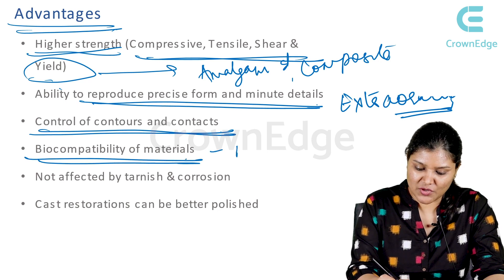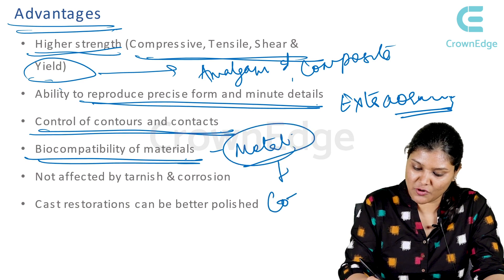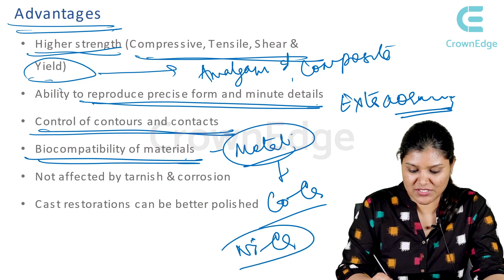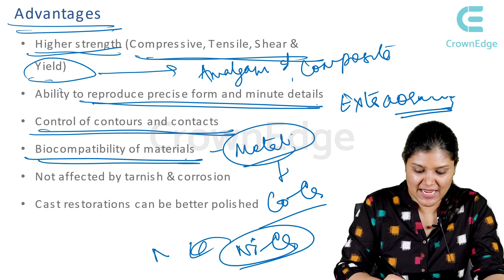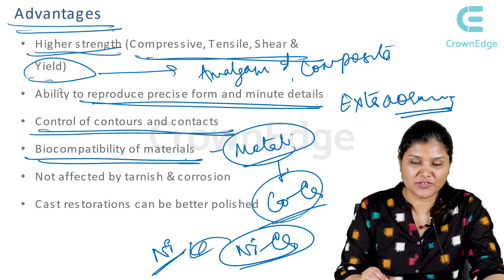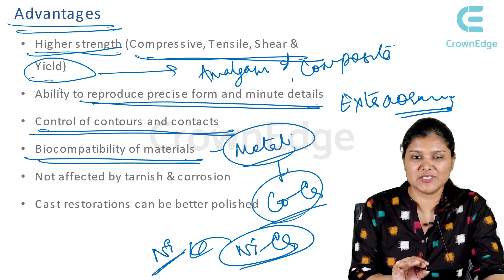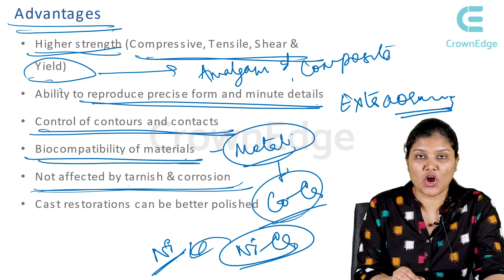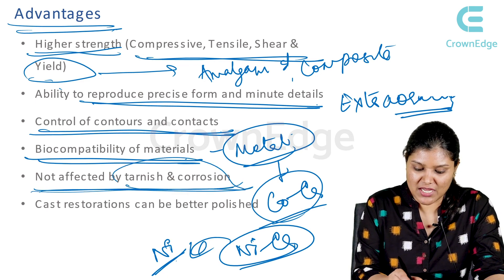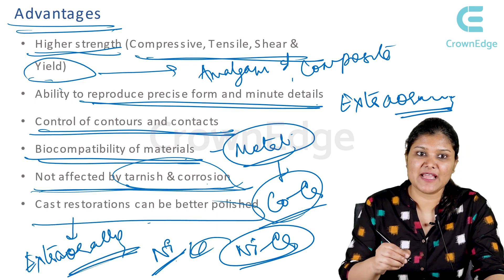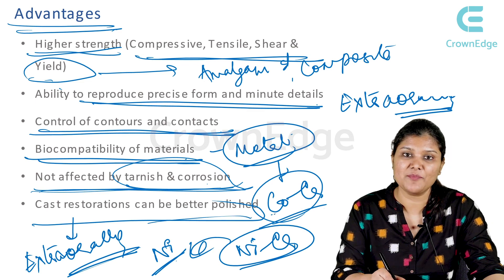Since it is a metal, biocompatibility of the materials is important. Earlier nickel chrome was being used, and patients who had nickel allergy were getting allergic reactions. After cobalt chrome was introduced, it is one of the biocompatible materials. Not affected by tarnish or corrosion. Unlike amalgam, cast restorations can be polished because they are fabricated extraorally, giving better polishability.